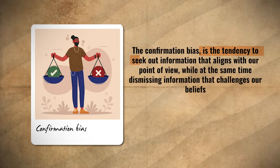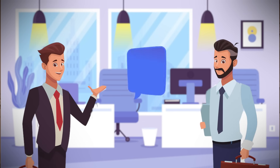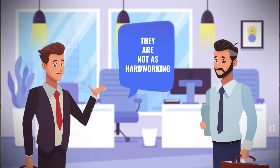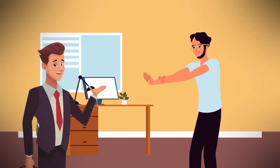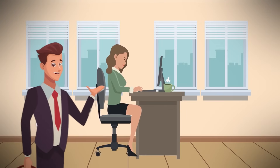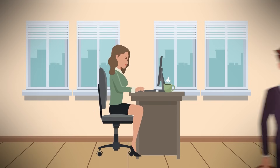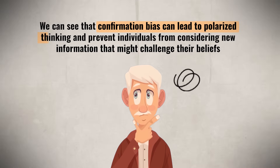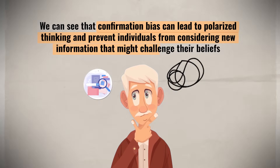Confirmation bias is the tendency to seek out information that aligns with our point of view while dismissing information that challenges our beliefs. This bias causes an individual to more easily believe evidence that supports their views and reject evidence that contradicts their perspective. For example, a coworker who believes younger generations aren't hardworking notices a young employee taking a short break and comments on it, but when another young employee stays late to finish a project, the coworker doesn't comment at all. This is confirmation bias — paying attention to behavior that confirms a belief while ignoring evidence that contradicts it. Generally, confirmation bias can lead to polarized thinking and prevent individuals from considering new information that might challenge their beliefs.